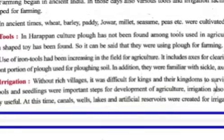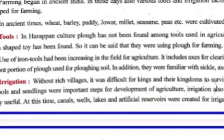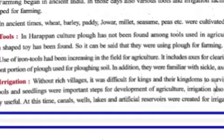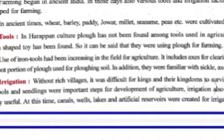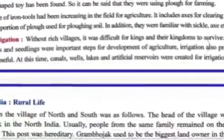Now, about tools. In Harappan culture, a plow-shaped toy has been found, so it can be said that they were using a plow for farming. As technology developed, various tools came into existence for better agriculture. The use of iron tools increased in the field of agriculture, including an axe for clearing forests and the front portion of the plow used for plowing soil. They were also familiar with the sickle.